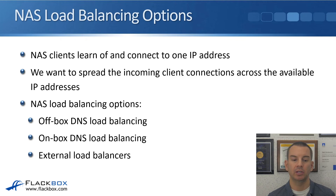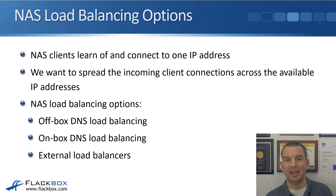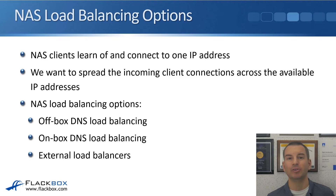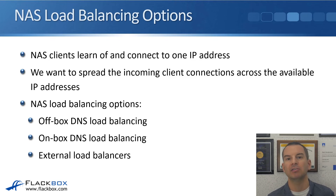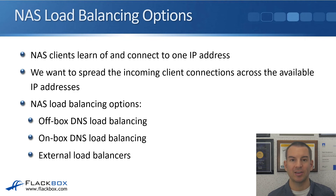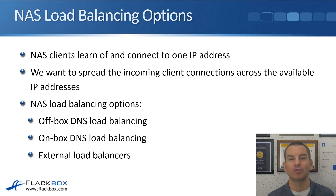How can we do that? We can use off-box DNS load balancing, on-box DNS load balancing, or external load balancers. Another way would be to manually configure a quarter of your clients to use .10, the next quarter to use .11, another quarter .12, and the last quarter .13 — but obviously that would be super inconvenient. We want an automated way of telling clients what IP address to use. We can use on or off-box DNS, or an external load balancer such as from F5. Configuring external load balancers is outside the scope of this course, but on-box and off-box DNS load balancing is within scope.